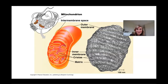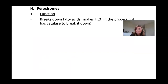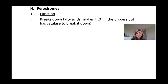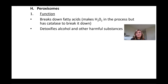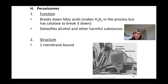The mitochondria often looks like a bean or kidney bean. Looking at the inside, you see the outer membrane structure and within it an inner membrane structure. Peroxisomes break down fatty acids and make hydrogen peroxide in the process, which helps catalase break other things down. They also help detoxify alcohol and other harmful substances, working along with the smooth endoplasmic reticulum. Their structure is one membrane bound together.